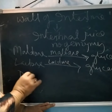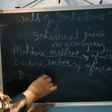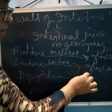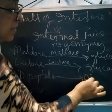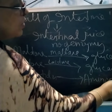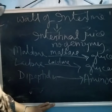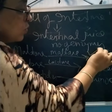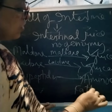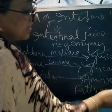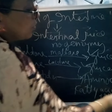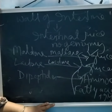Dipeptides are converted into the ultimate product, amino acids. So the final ultimate products of digestion are glucose, amino acids, fatty acids, and glycerol.